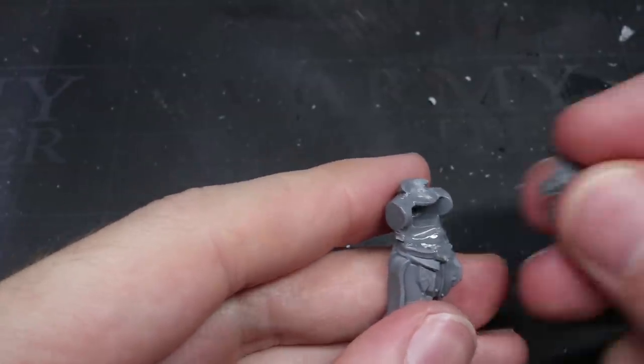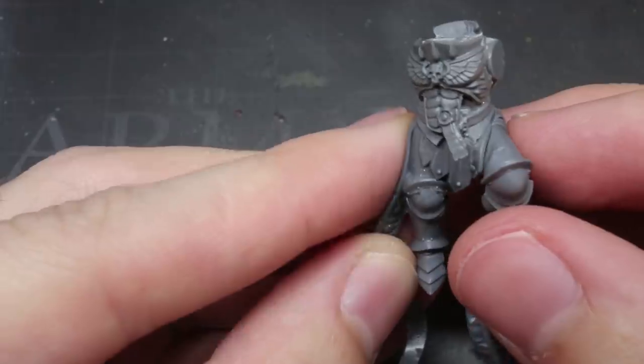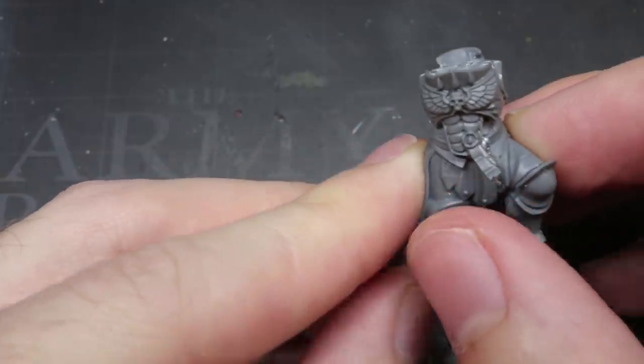Again, it took quite a bit of trimming to get this far but for a one off model like this, that extra time is well worth the result. Once the torso had been glued, I was then able to attach the leg.